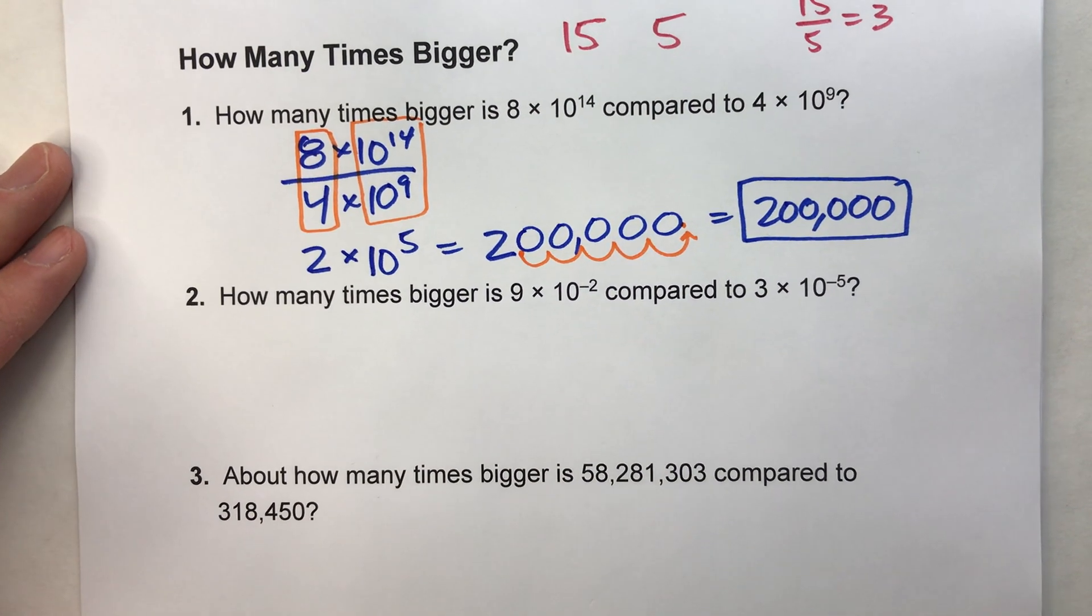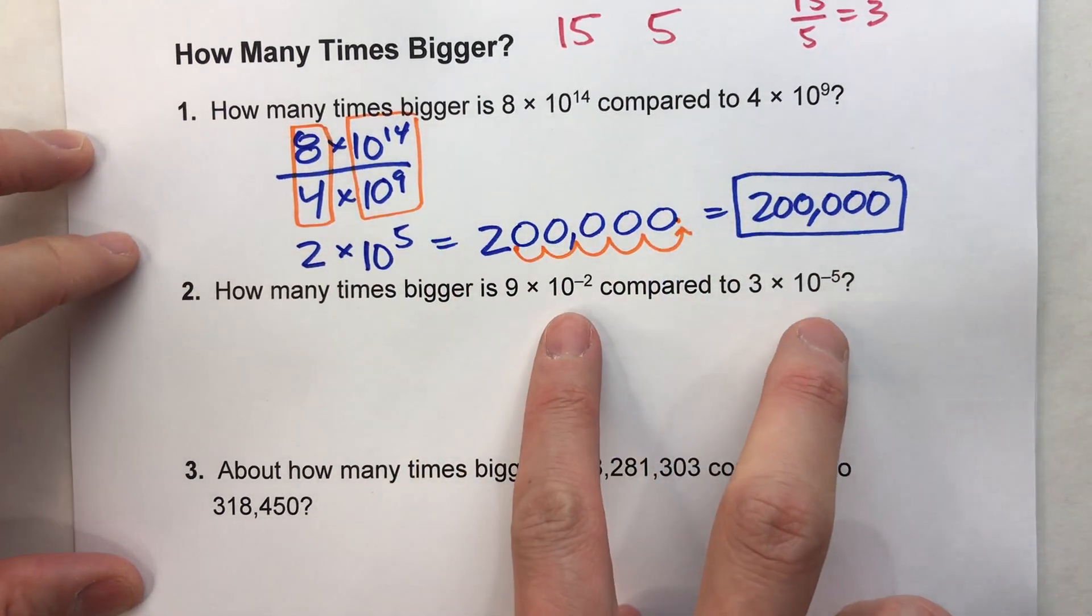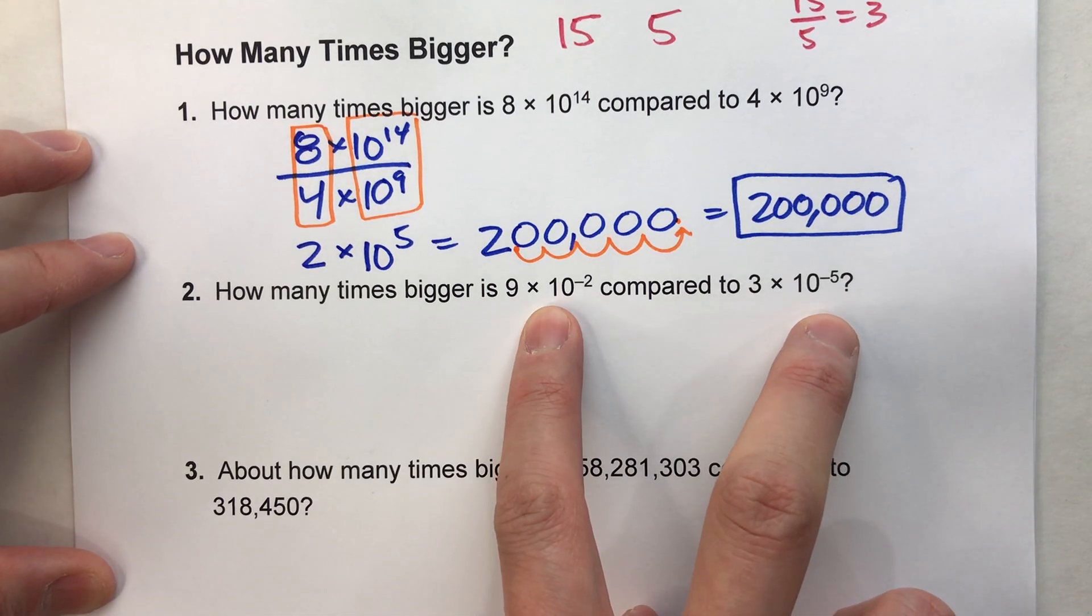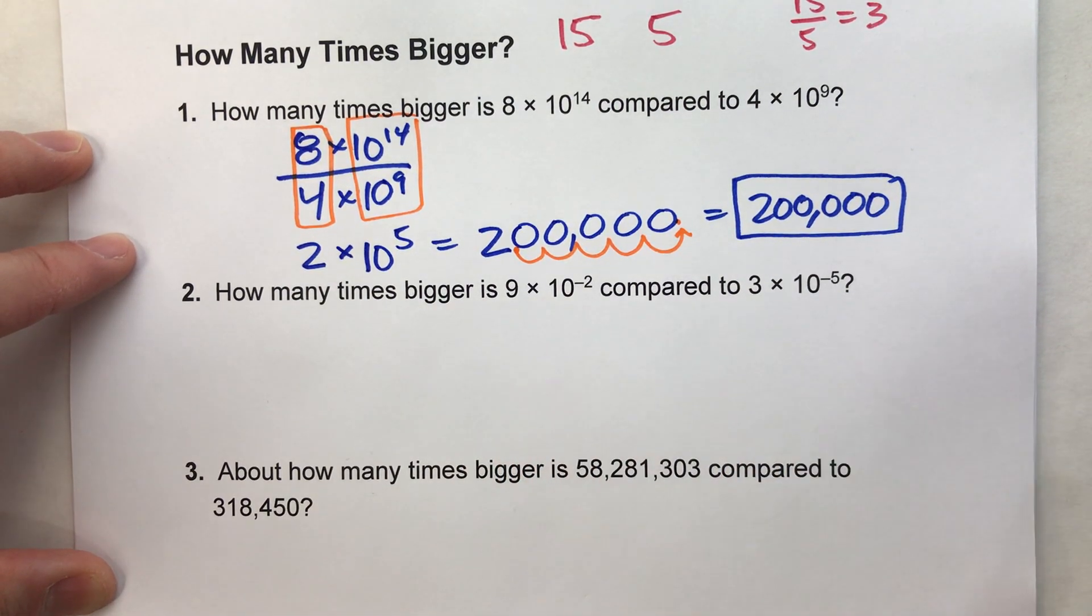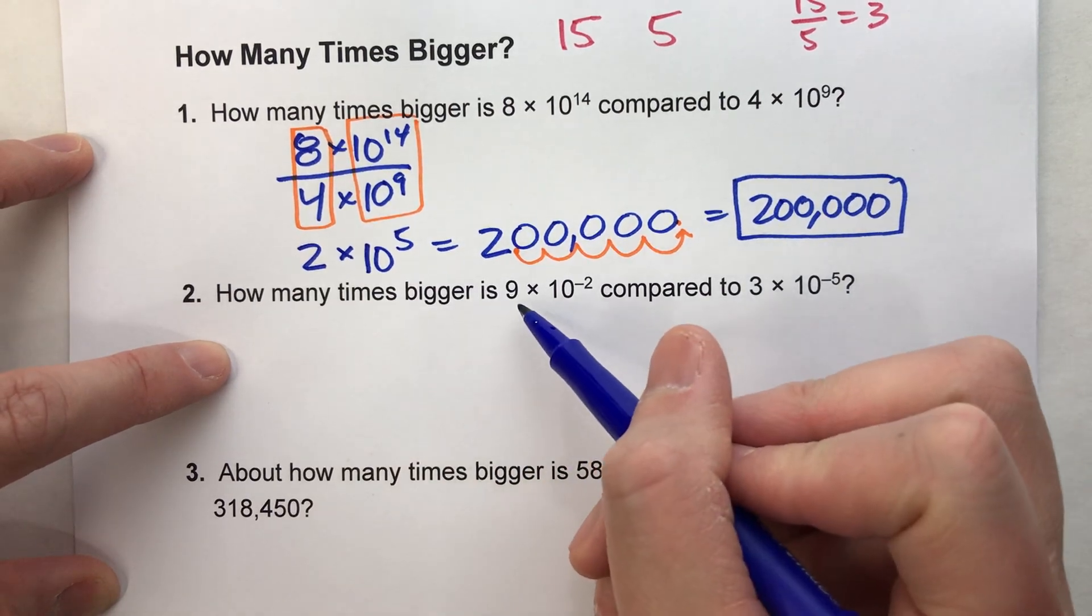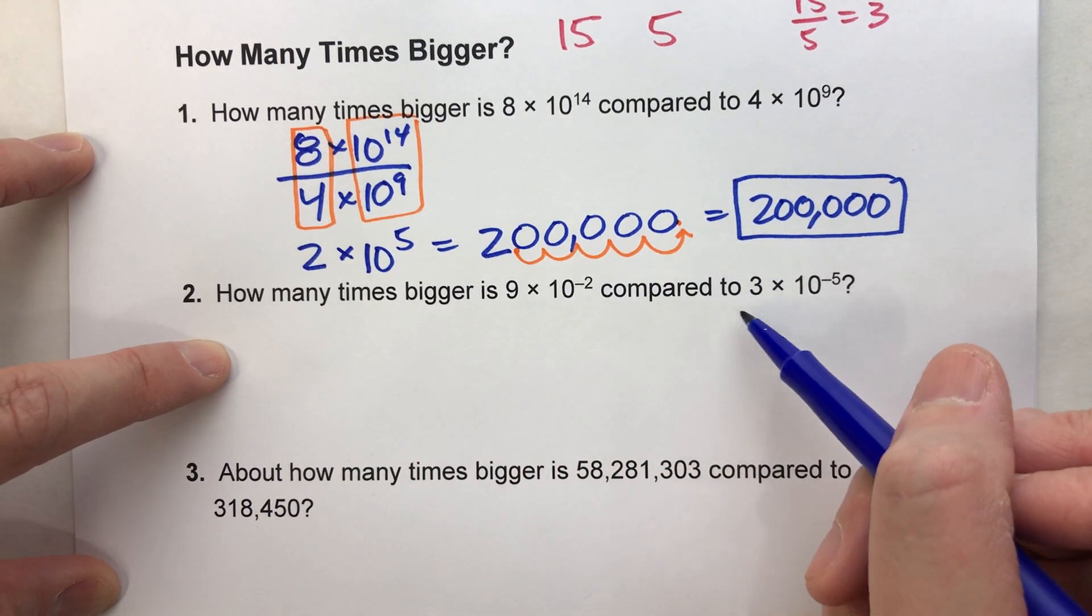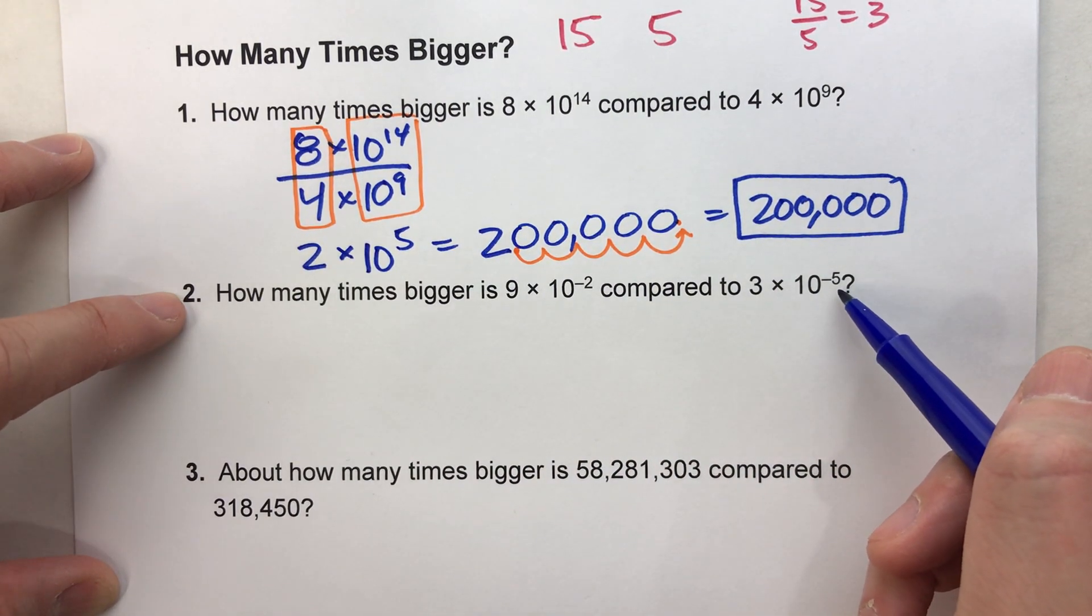Now let's do a harder one. Because this also works with really small numbers. In this case, numbers multiplied by 10 to a negative power. How many times bigger is 9 times 10 to the negative second power, compared to 3 times 10 to the negative fifth power? Let's find out.